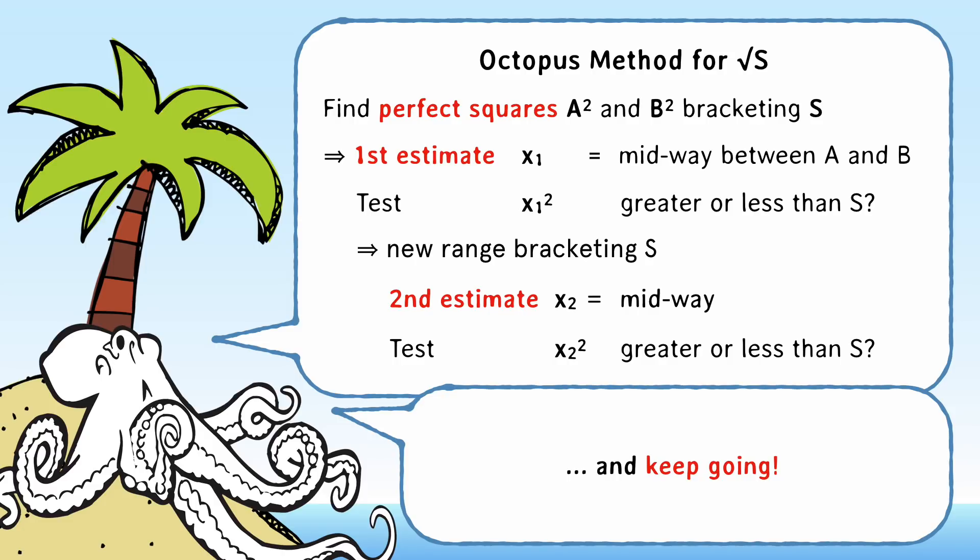So, go on. Calculate like a cephalopod. Try this one out for yourself. Find the square root of 612 to, I don't know, five decimal places.